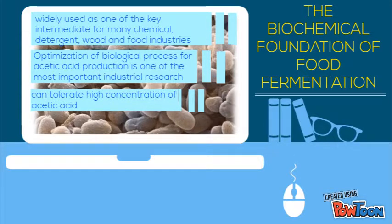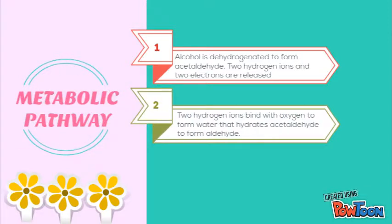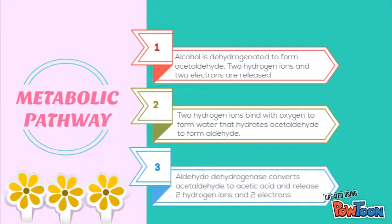Optimization of biological processes for acetate production is one of the most important industrial research subjects. Acetobacter species can tolerate high concentrations of acetic acid. In the process, ethanol is dehydrogenated to form acetaldehyde — two hydrogen ions and two electrons are released. Then two hydrogen ions combine with oxygen to form water, which hydrates acetaldehyde. Aldehyde dehydrogenase then converts acetaldehyde to acetic acid, releasing two more hydrogen ions and two electrons.